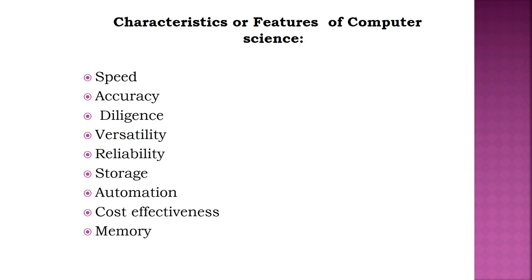The next characteristic is Accuracy. A computer performs calculations 100% accurately, giving exact results. If any fault occurs, it may be due to inconsistencies or inaccurate data which has been loaded — the computer itself will not make mistakes. Next is Diligence: a computer can perform millions of tasks or calculations with the same consistency and accuracy. It does not feel tired or lack concentration, and its memory makes it superior to human beings.